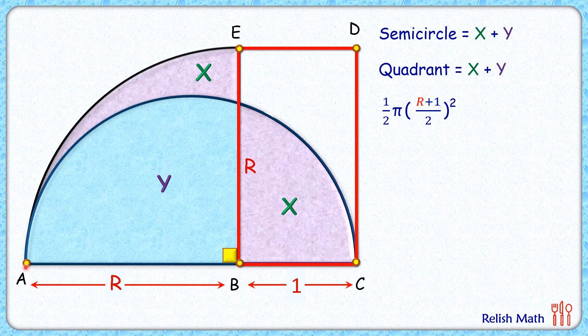Same way, area of this quadrant, its radius is r centimeters, and area of quadrant will be 1/4 times πr².